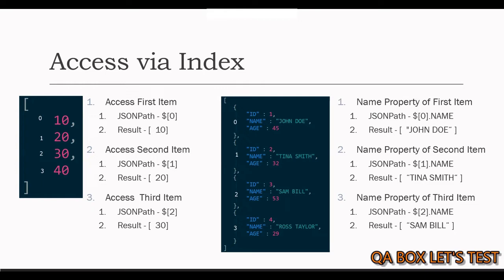To retrieve the first item, we again say dollar followed by square brackets, and within these brackets we mention the index of the item, which is 0 in this case. This would return us the first item from the array whose type is object. With the help of dot notation, we can now easily retrieve the name property of the first item in the array. Likewise, we can do the same for the second and third item.